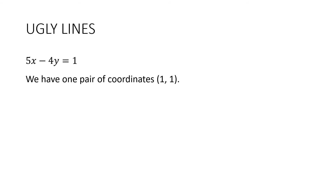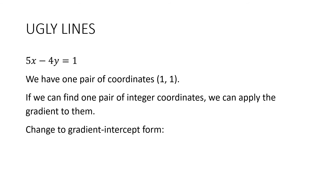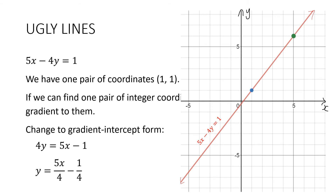Instead of starting at the y-intercept, we're going to start at the point 1, 1. But we're going to need to find the gradient, so we'll change to gradient intercept form. Taking the 4y over the other side: 4y equals 5x take away 1. Dividing everything by 4, our gradient is 5 on 4 — so every four spots I go to the right, I go up 5. Here's our line: instead of starting at the y-intercept at negative one quarter, I'm starting at 1, 1, and then I've gone up 5 across 4 to get my second point. Draw up the line, label the line, and put arrows on the end.